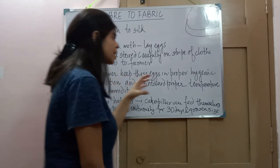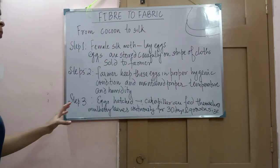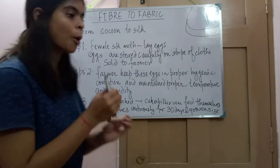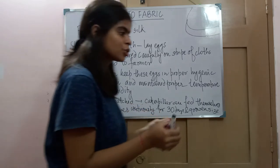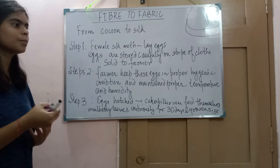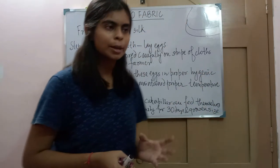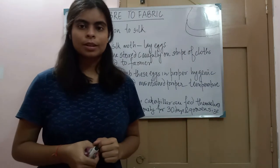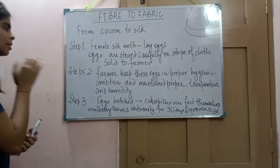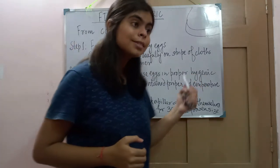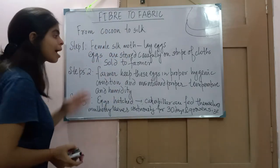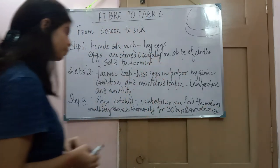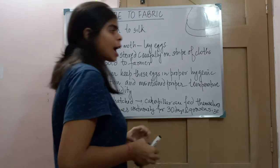The second step: the farmer keeps the eggs in a proper hygienic condition and maintains a proper temperature and humidity. Just as a newborn baby needs proper temperature and humidity because of their low immunity, these eggs are also delicate. We must maintain a proper hygienic condition, proper temperature and humidity so that the cells inside the egg can grow.